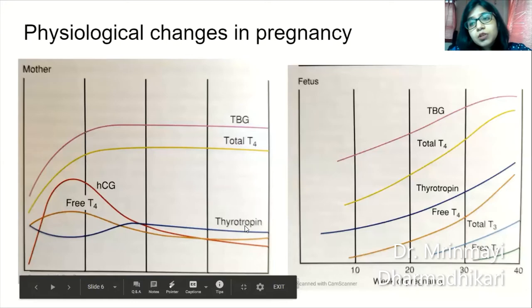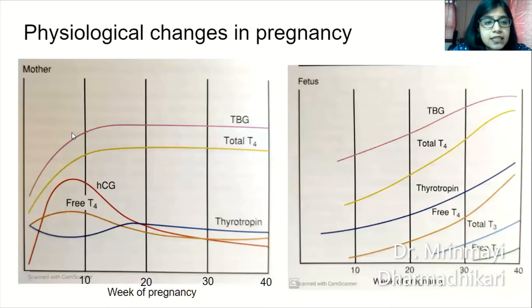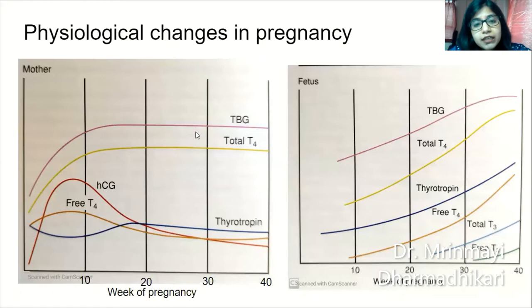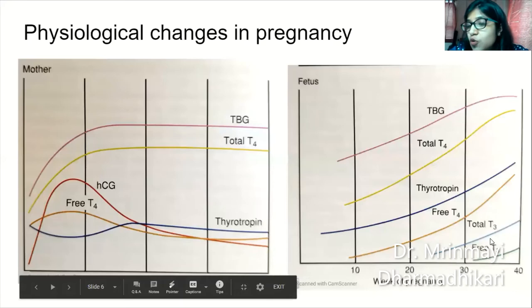Thyroid binding globulin increases in pregnancy; towards the beginning of the second trimester, TBG levels are almost twice the baseline and then plateau, and consequently total T4 also increases. On the fetal side, all the hormones increase or start increasing in the first trimester, while free T3 and total T3 start increasing in mid-pregnancy.